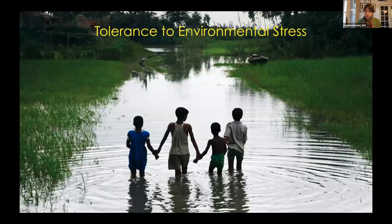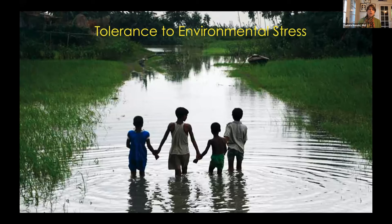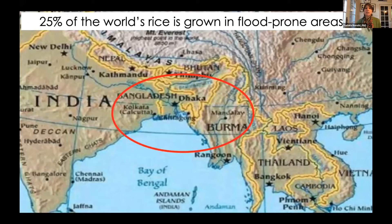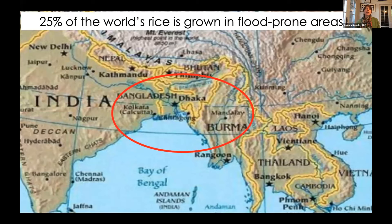I want to briefly mention work with colleagues on engineering tolerance to environmental stress. As climate changes, we're predicted to have more droughts and more flooding. These children in Bangladesh are walking through their family's flooded field. Although rice grows well in standing water, rice plants submerged for more than three days will die. This is a particular problem in eastern India and Bangladesh, where 25% of the world's rice is grown — flood-prone areas where an estimated 4 million tons of rice, enough to feed 30 million people, is lost every year to flooding.